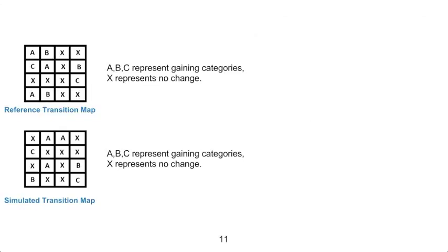We will use a simplified example to show how the transition calculations are done. The top map represents our reference transition map, and the bottom map is our predicted transition map. The symbols A, B, and C in the map represent the gaining category over the transition period. So if B represents the built category, then a value of B represents a reference gain of built over the transition period in the top map, and a simulated gain of built in the bottom map.